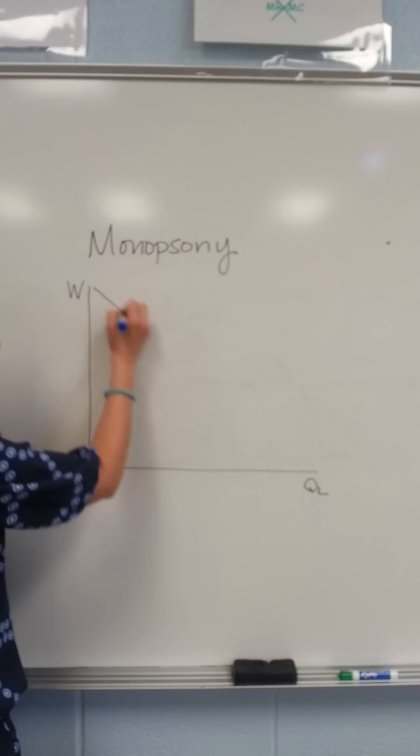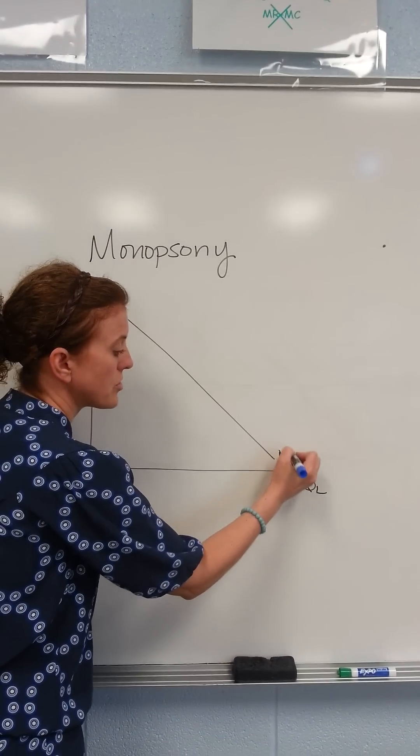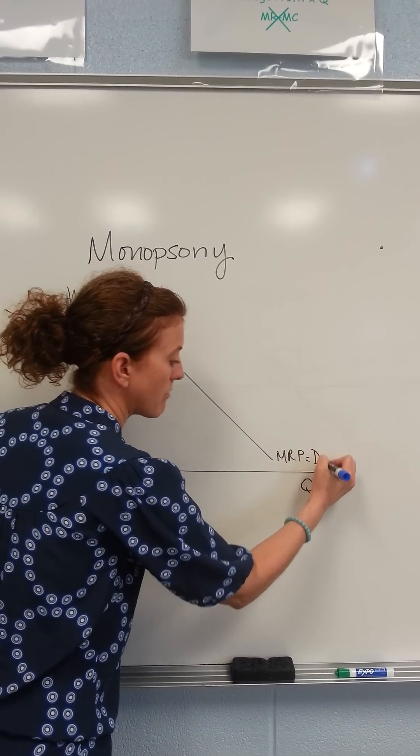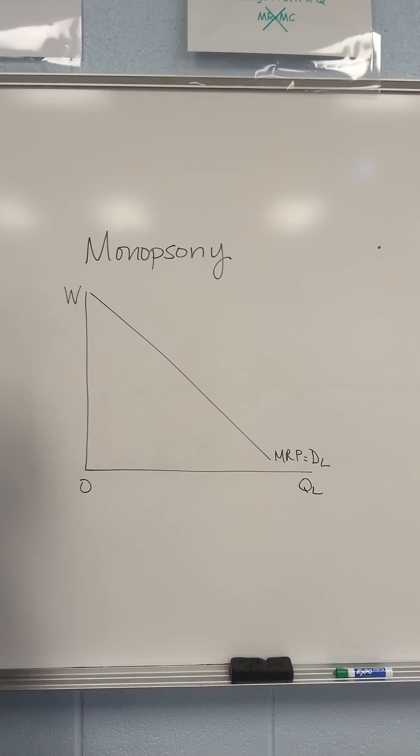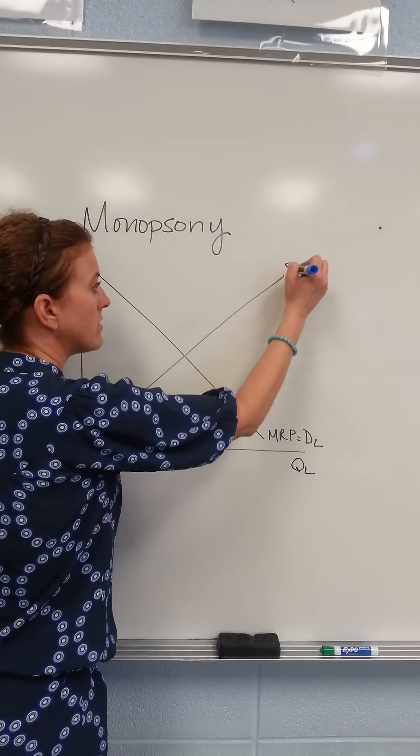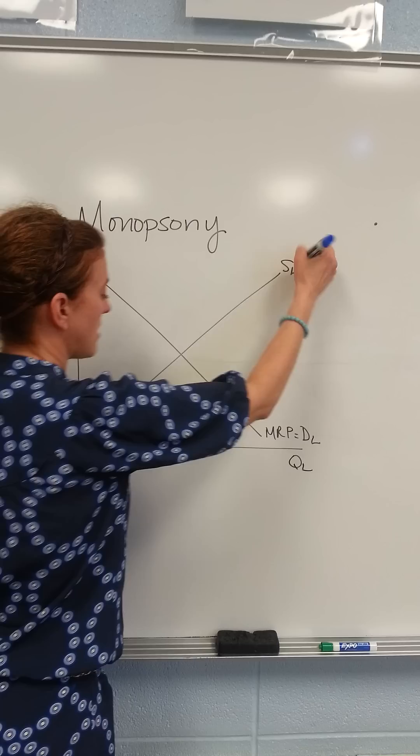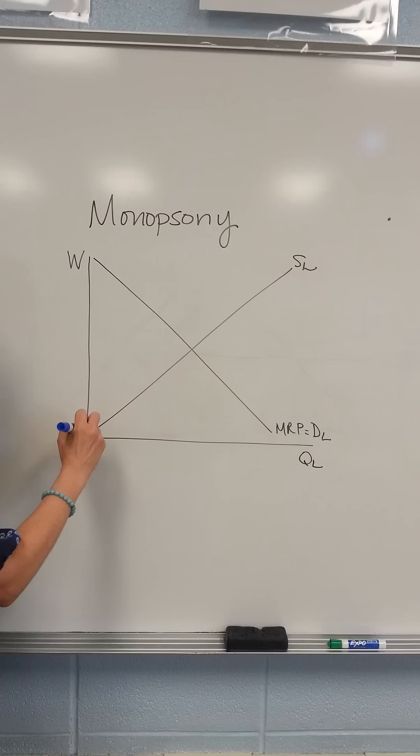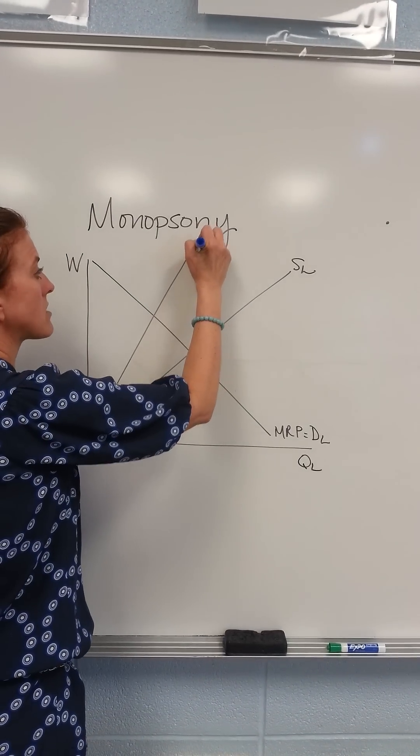We have a downward sloping marginal revenue product curve, which is the demand for labor curve in this market. There's also an upward sloping supply curve and a separate higher marginal resource cost curve.